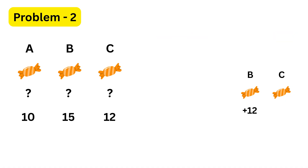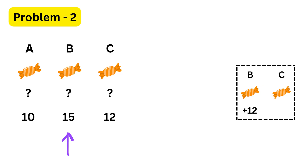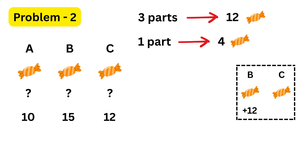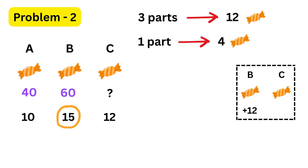The question says that B gets twelve more chocolates than C. In the ratio, B has fifteen parts and C has twelve parts. The difference between them is three parts. So those extra three parts correspond to twelve chocolates in real life. If three parts equal twelve chocolates, then one part must equal four chocolates. A has ten parts, so A gets ten times four, which is forty chocolates. B has fifteen parts, so B gets fifteen times four, which is sixty chocolates. And that's it — that was out of this world.